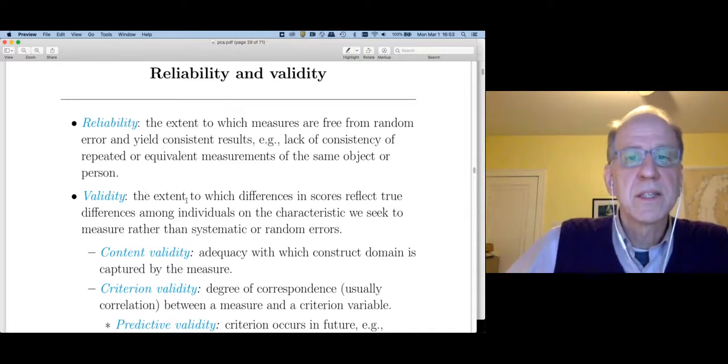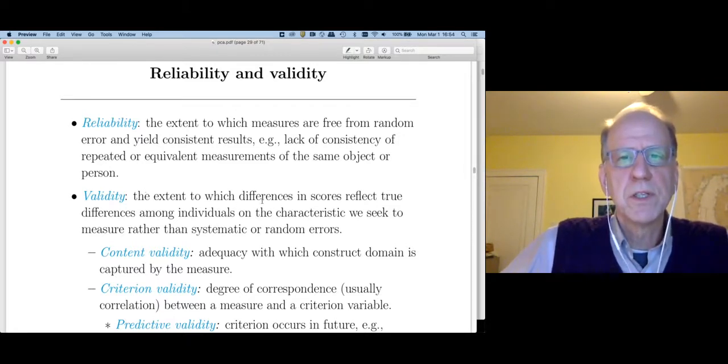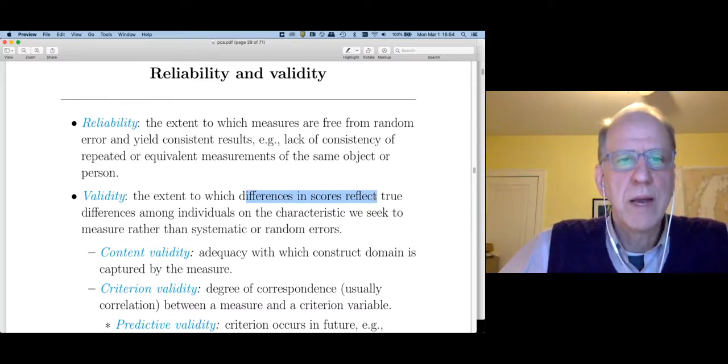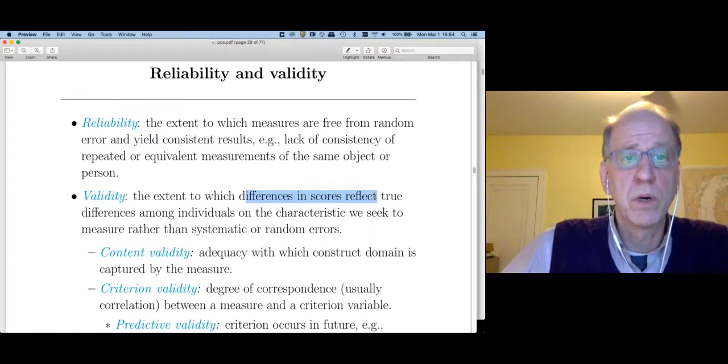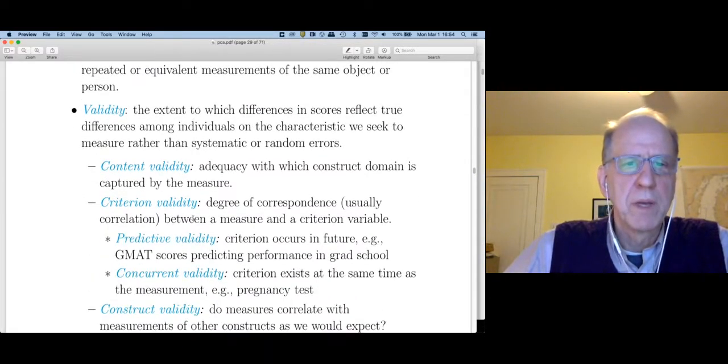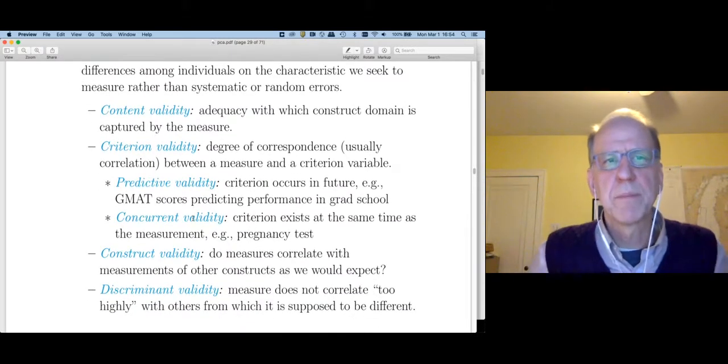Validity, on the other hand, is the extent to which differences in scores reflect true differences across individuals. So if I had one student who had a high score on the math test and another student who had a lower score on the math test, validity means that the student with the higher score actually has more mathematical ability than the student with the lower score. Now, there are many ways that a measure can lack validity, and I've listed some of the major ones here.